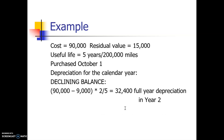In year two, we take book value times 2/5. The cost is $90,000; since we took $9,000 depreciation in year one, the book value is now $81,000. $81,000 times 2/5 gives us $32,400. That is our depreciation in year two, since we held the asset for the whole year.